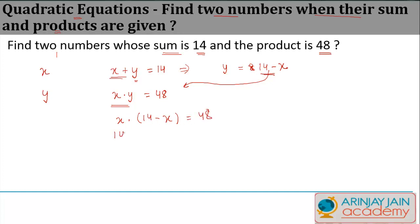Or in other words, 14x minus x square, move this to the other side, minus 48 is equal to 0. Or if you want to just reverse it, we can move this to the other side as well and write this as x square minus 14x plus 48 is equal to 0.